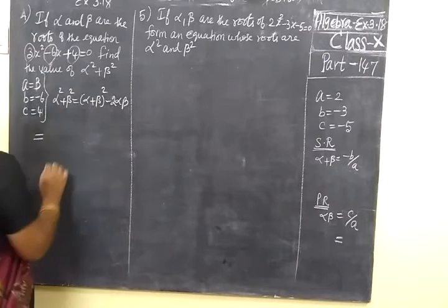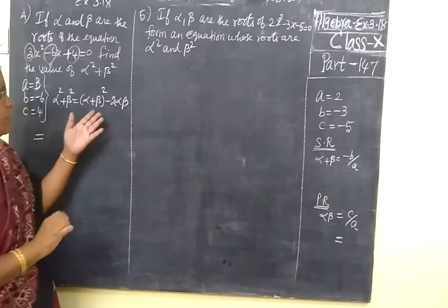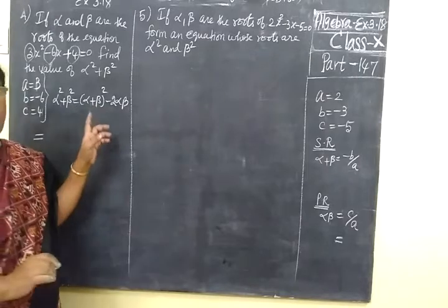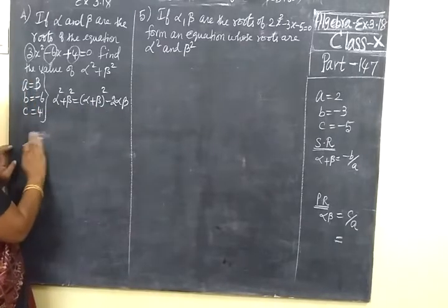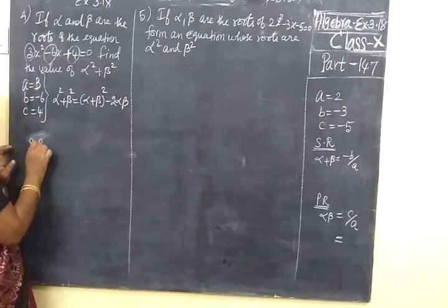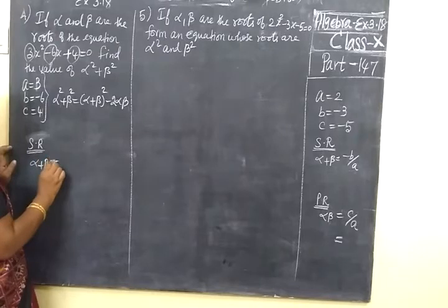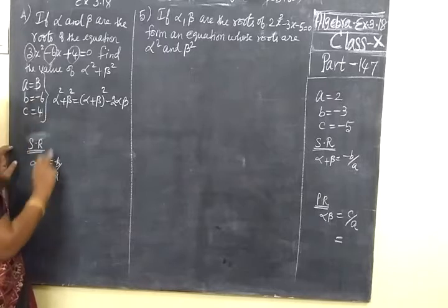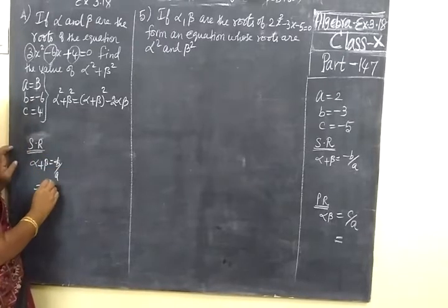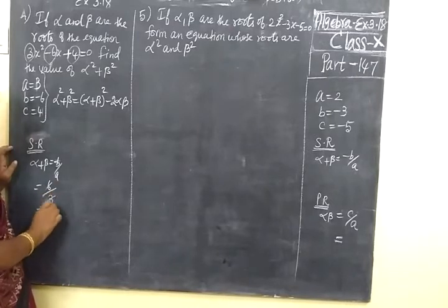So we are substituting alpha square plus beta square equal to alpha plus beta whole square minus 2 alpha beta. So alpha plus beta is sum of roots. Sum of roots is minus B by A. Alpha plus beta equal to minus B by A equal to minus. Here it is minus, here it is minus. So 6 by A is 3. So answer is 2.